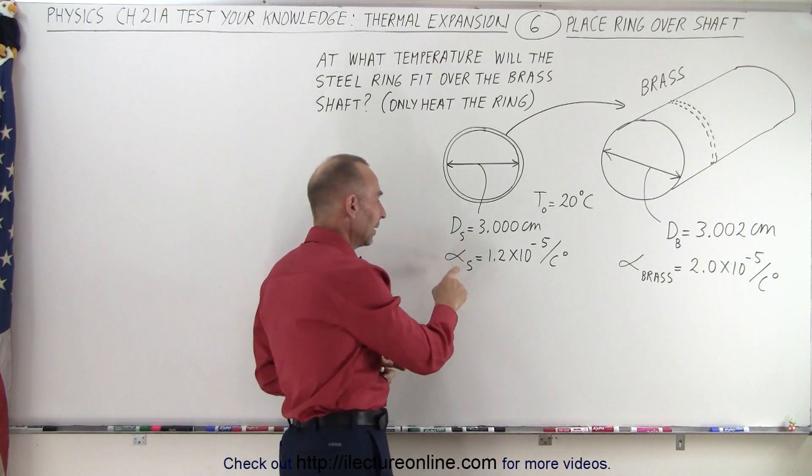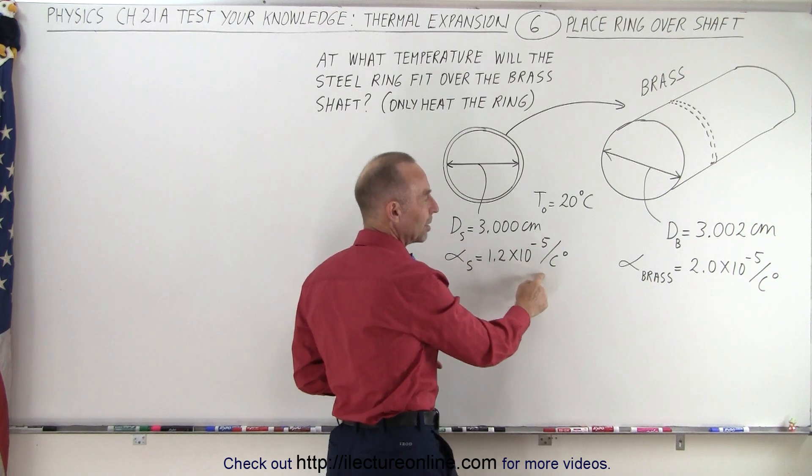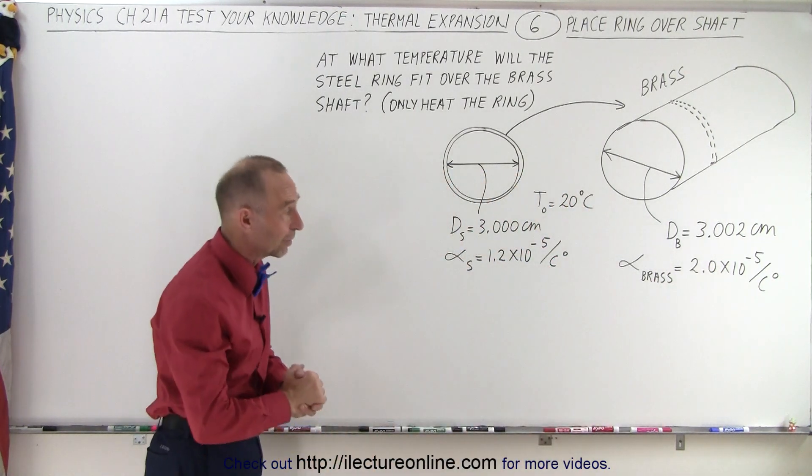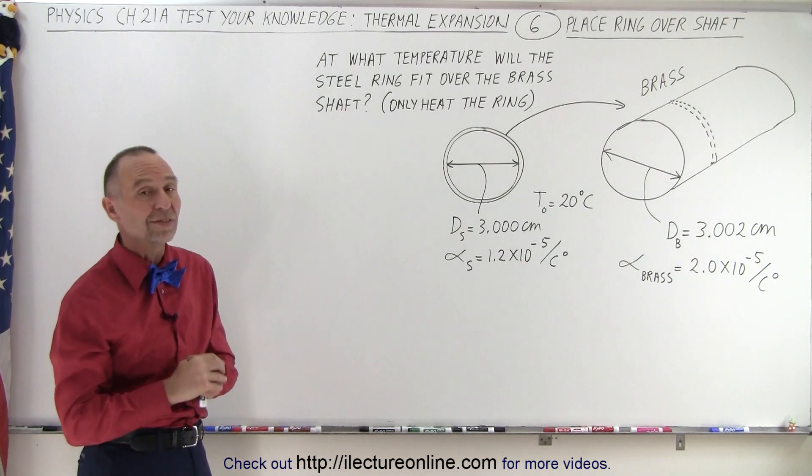Notice that the linear coefficient of expansion for steel is 1.2 times 10^-5 per degree Celsius. For brass it's 2.0 times 10^-5 per degree Celsius. Let's say that we start out with both pieces at 20 degrees Celsius.